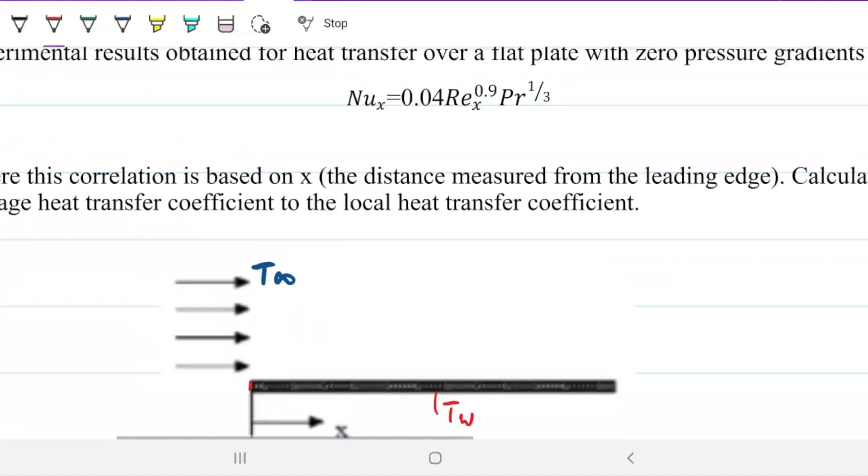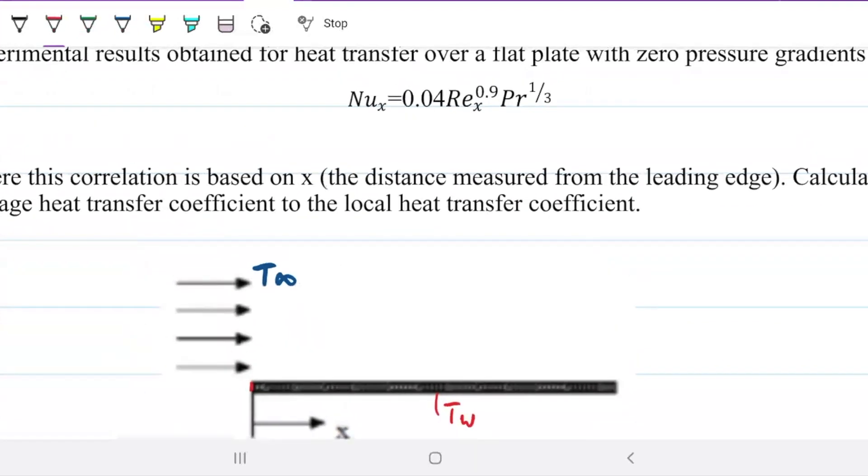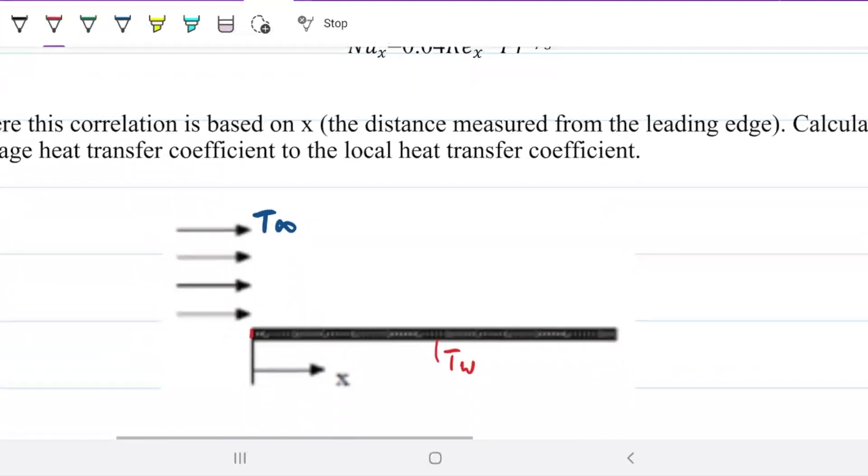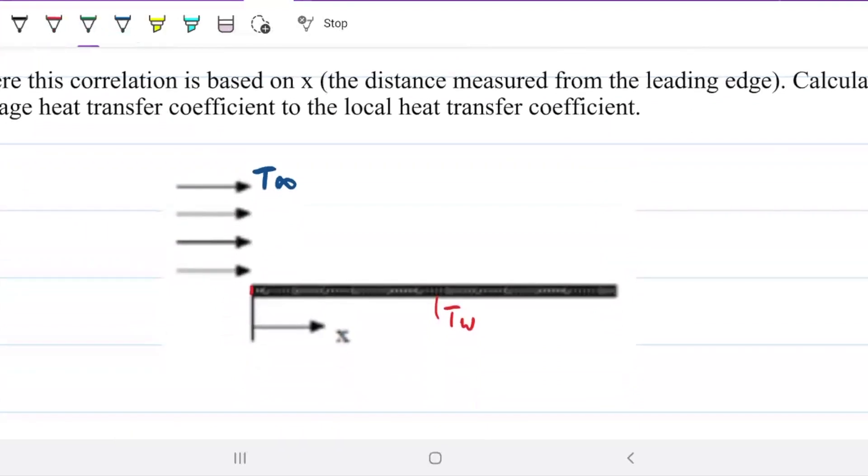But Nusselt has been experimentally determined to be dependent on Reynolds and Prandtl. And we know that as we go down this line here, our Reynolds is changing because we know Reynolds is the density of the fluid times the velocity of the fluid times the distance x, or diameter in this case, length of the plate over the viscosity.